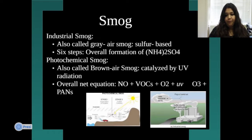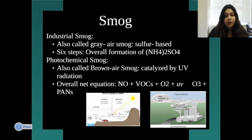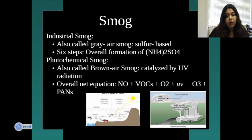There are different air pollutants released into the air. There are two types of smog. Industrial smog is also called gray air smog — this is the gray smoke you see coming out of power plants or big factories. It forms through six steps, and the end products include NH4 and SO4.